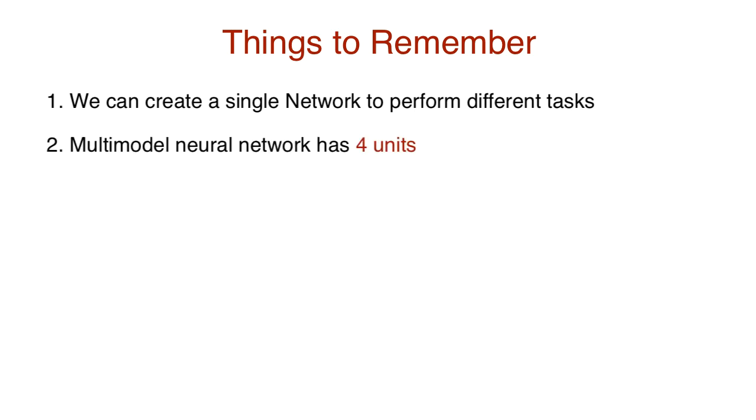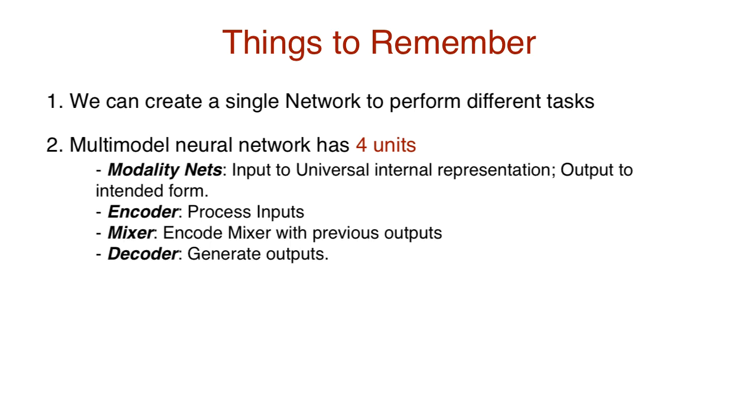So here's a few points to remember from this video. It is possible to design a multi-model neural network capable of performing different tasks. The multi-model architecture has four basic components: modality nets to convert different input types to a universal internal representation, an encoder to process inputs, a mixer to encode inputs with previous outputs, and a decoder to generate outputs.